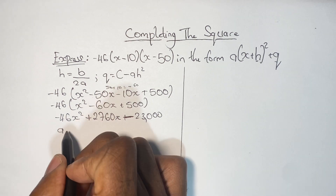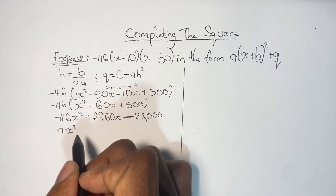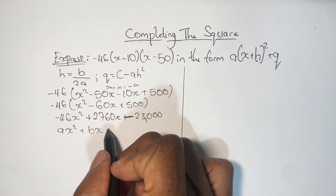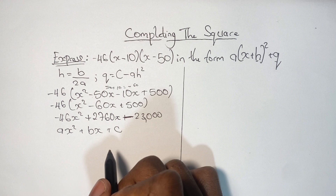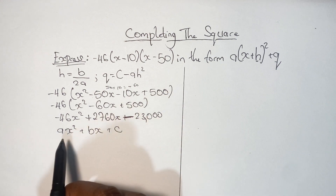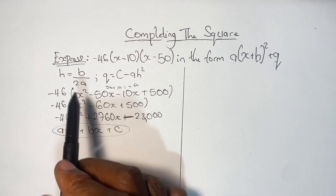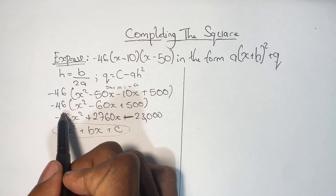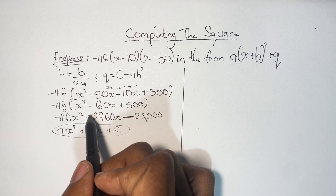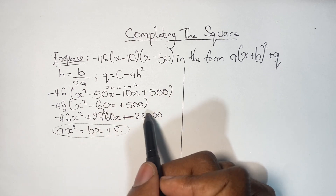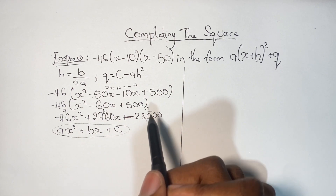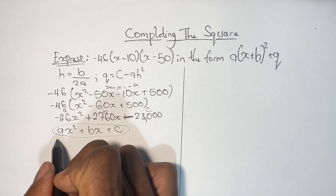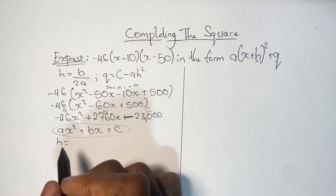We know we have something looking like AX² + BX + C — that is the general formula for solving any quadratic expression. So negative 46 will be our A value, 2760 will be our B, and negative 23,000 will be our C value.